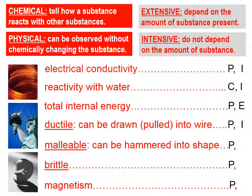Ductility is an intensive property — a small amount of a ductile metal can be drawn into wire, or a large amount. Same with malleability. Same with brittleness — a small piece of glass is brittle, and a larger piece of that same type of glass is also brittle. And magnetism is the same way.